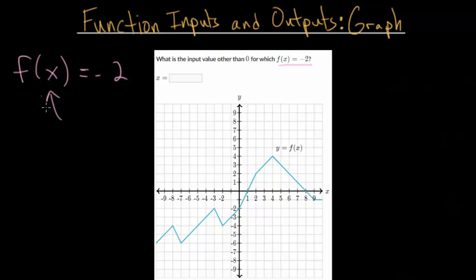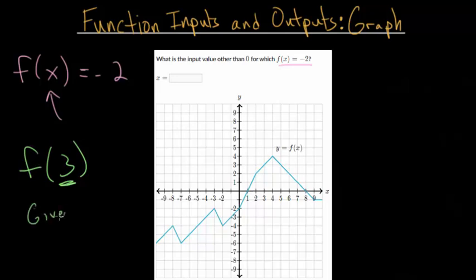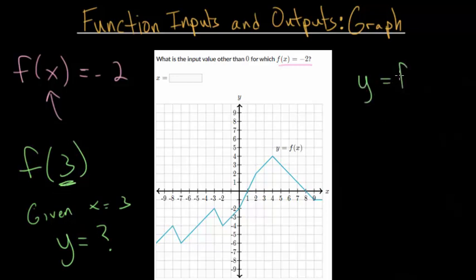You might be used to seeing problems like f of 3, where the inside is replaced by a number. This is essentially the opposite question. The green question basically says: given x equals 3 — that's the inside value, the independent variable on the horizontal x-axis — we need to figure out what y is equal to, or what our function is equal to. Remember that y and your function value are interchangeable — they're the same thing.